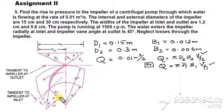For radial flow at inlet, this is a velocity triangle you are familiar with. And here alpha is equal to 90 degrees, the flow is radial at inlet. V1 is equal to VF1, and VW1 is 0.